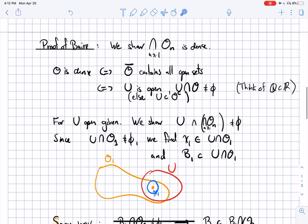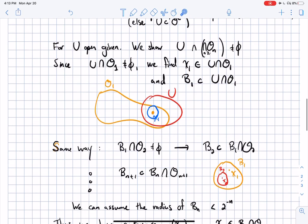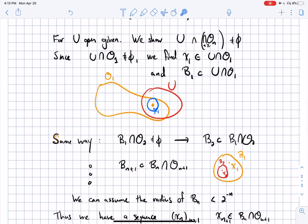What you do is you start with one open set O1. I have O1, this is my given open set U. I want to show that the intersection is not empty with the full intersection. So start with O1. I have X1 that must be in the intersection, but since this is open, I can find a ball which is in that intersection as well. Then you go on like that. Now instead of U, you take B1. So B1 intersect O2. O2 is dense, must be non-empty.